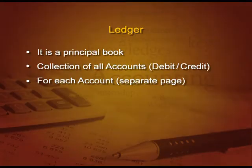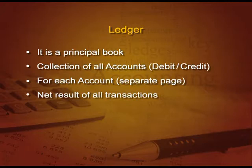For example, if we have to make Ram account, it will be on page number 1, and if we have to make Mohan account, it will be on page number 2. No two accounts on one page. This account will show the net result of all the transactions.